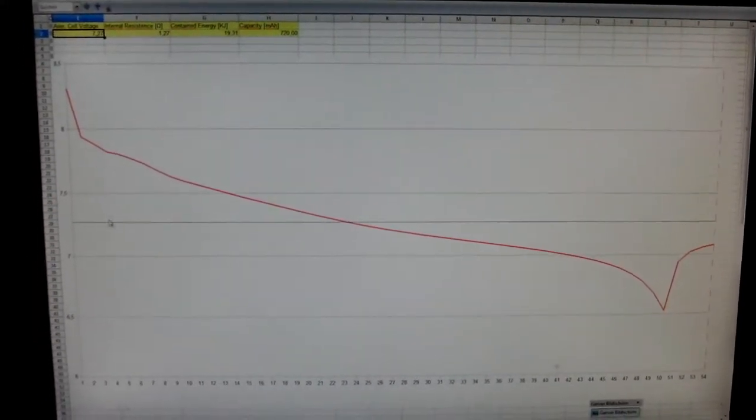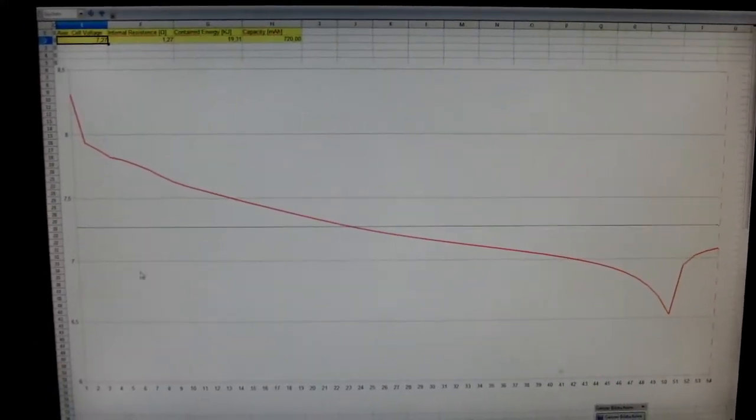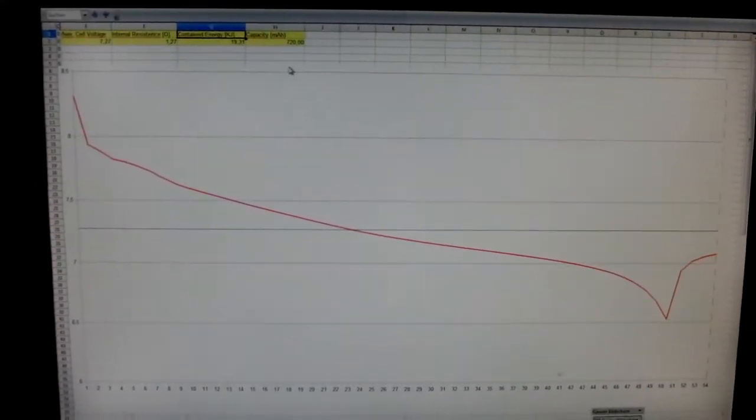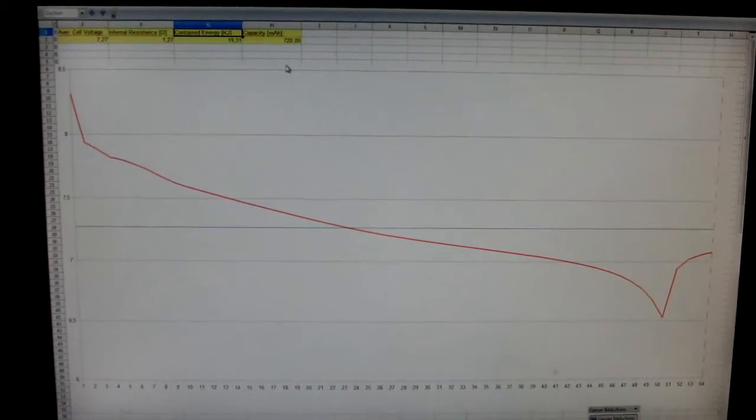And I calculated the area below this graph to get the contained energy in the battery which is about 19.3 kJ.